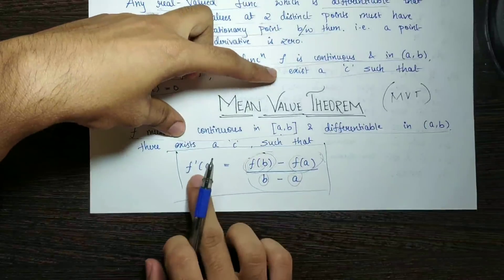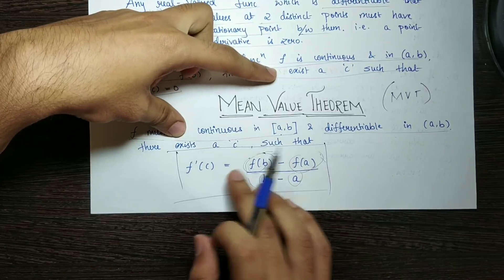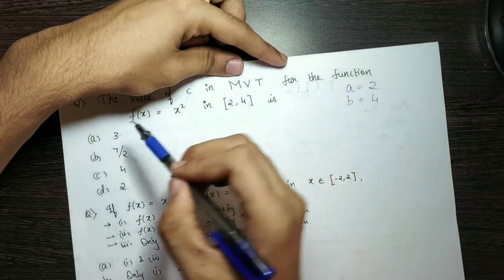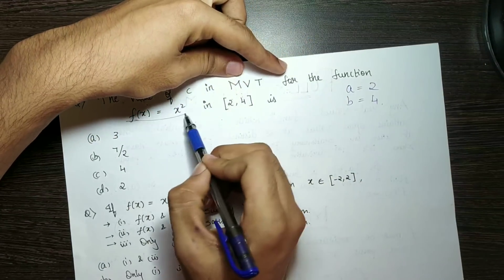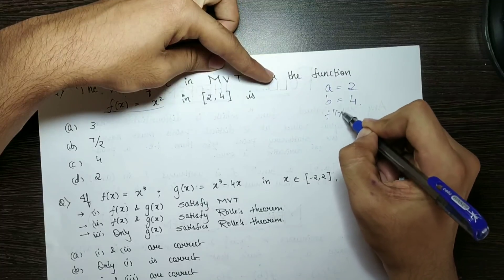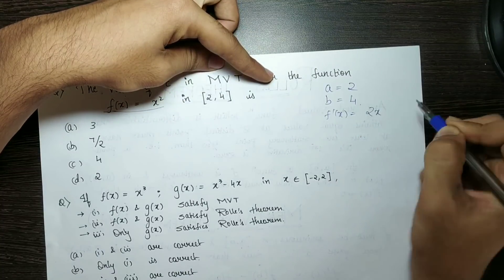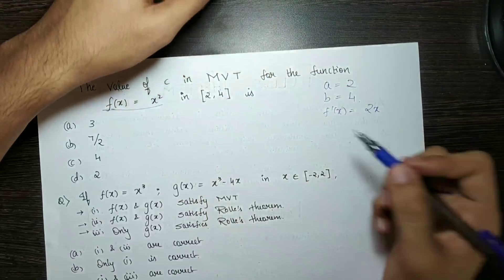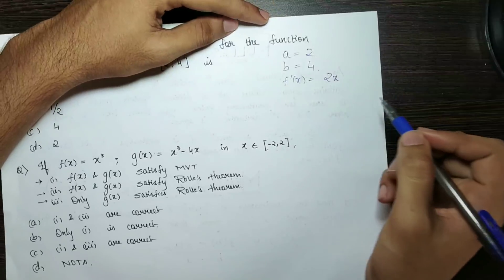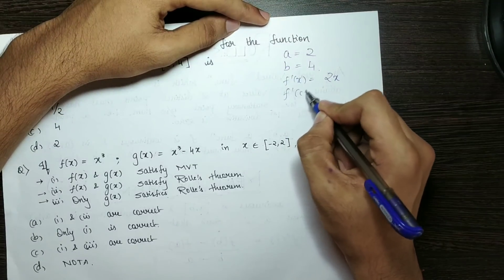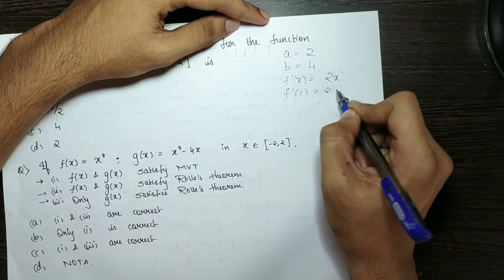Function f(x) equals x². The Mean Value Theorem statement gives us f'(c) equal to the slope expression. Since f'(x) equals 2x, we get f'(c) equals 2c.